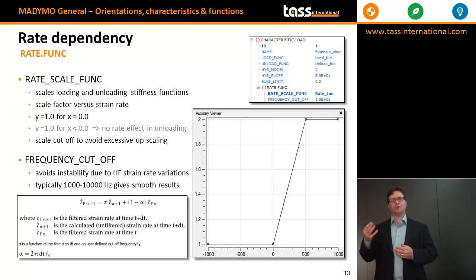For example, the rate scale func may be linear up to a specific constant level to avoid excessive rate scaling, where for increasing rates, the loading and unloading functions are scaled with a certain factor. To avoid excessive scaling in high-frequency vibrations, a frequency cutoff attribute can be specified, and a value between 1000 and 10,000 Hz generally gives well-behaved results.